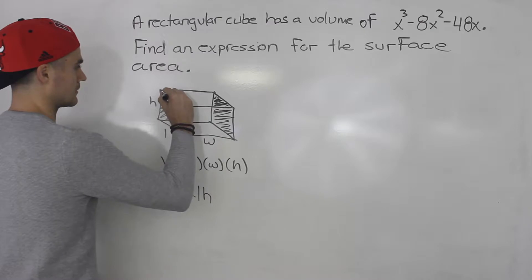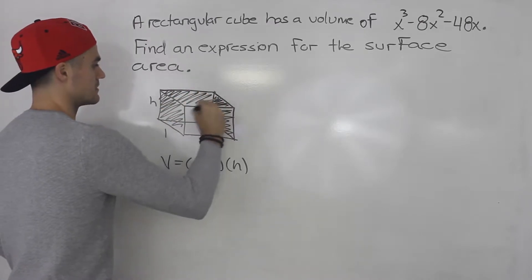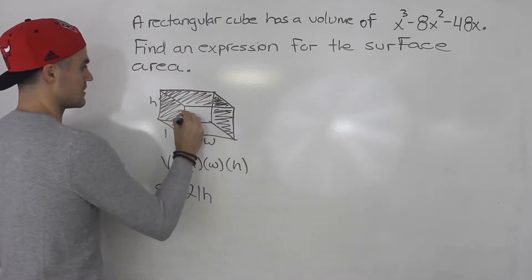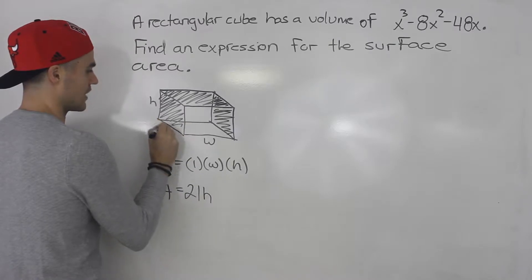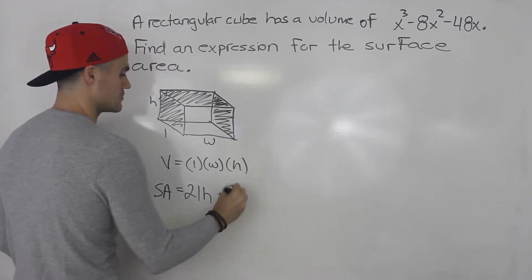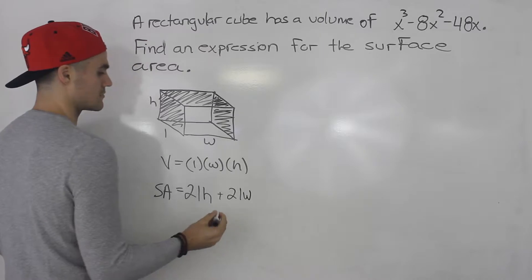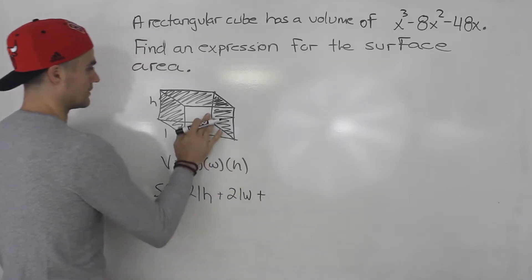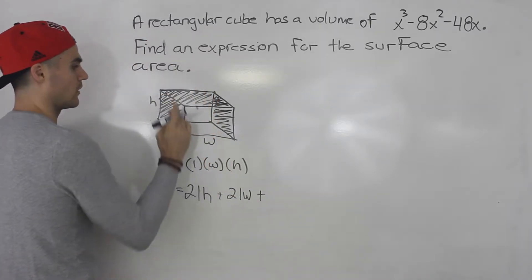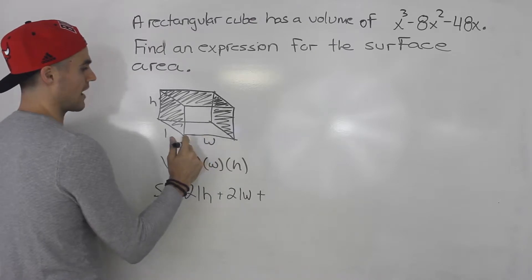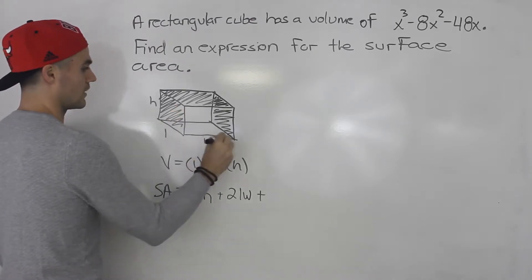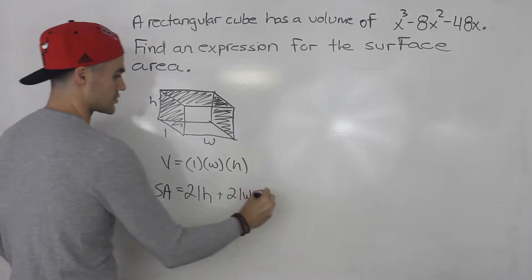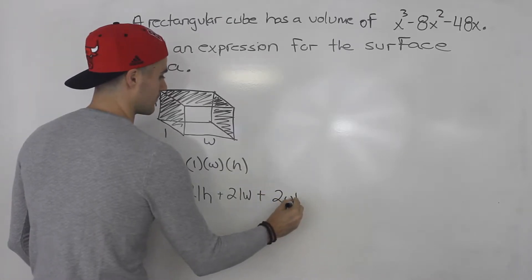And then the same thing for the top face and the bottom face. The top and bottom face have an area of length times width and there's two of them. So two times length times width. And then the face in front and the one at the back, they both have an area of width times height, and there's two of them as well.